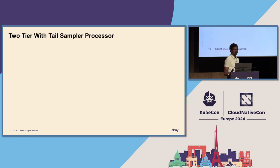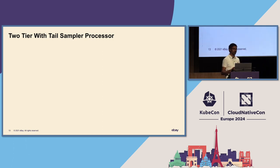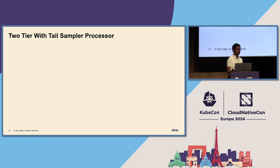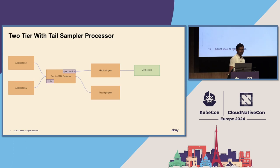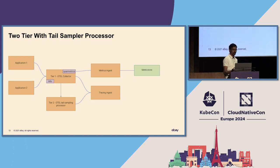The next approach we tried was a two-tier approach, where we moved the tail sampler out alone. What we saw with the tail sampler is that all the spans for a given trace ID always need to land on the same OpenTelemetry Collector for it to hold them in memory, make the sampling decision, and then flush it out. So applications write to the first tier where we do span metrics and Kubernetes enrichment; span metrics go into the metric store, and the raw trace goes directly into the trace store, but we also write a copy into the second tier where we do the tail sampling and then ship it into the trace store.